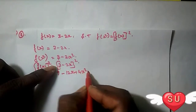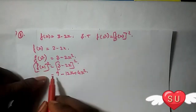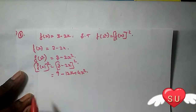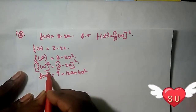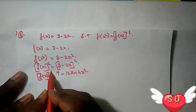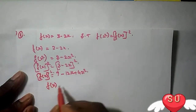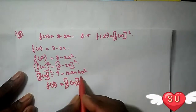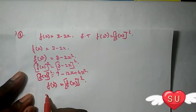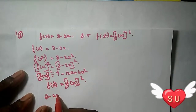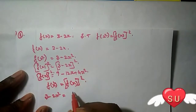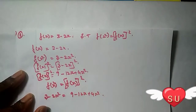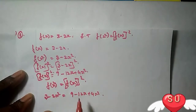So we have already found both sides. Therefore, f(x²) = 3 minus 2x² and [f(x)]² = 9 minus 12x plus 4x². Now we set f(x²) equal to [f(x)]²: 3 minus 2x² = 9 minus 12x plus 4x².